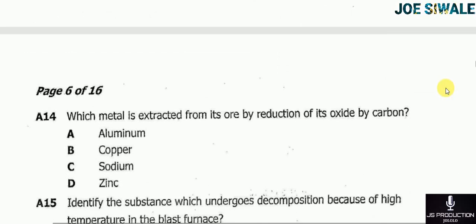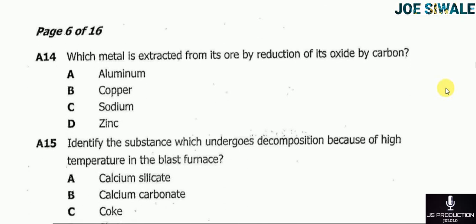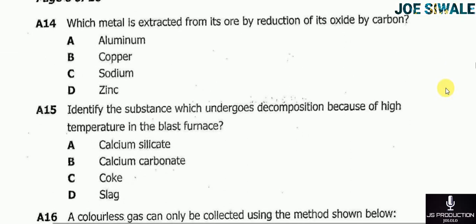Question 14 reads: which metal is extracted from its ore by reduction of its oxide by carbon? A — aluminium; B — copper; C — sodium; D — zinc. The answer is D, which is zinc.